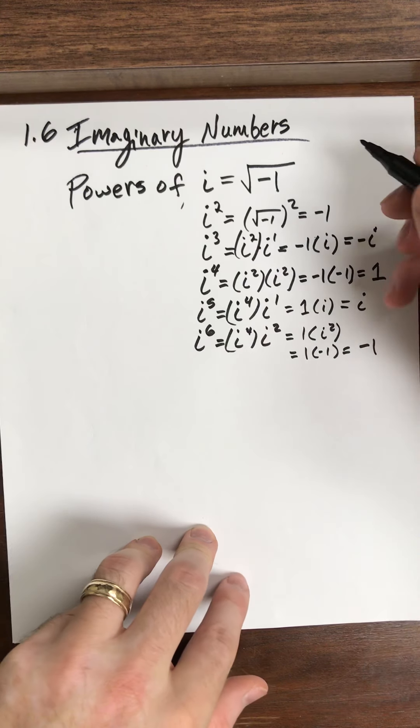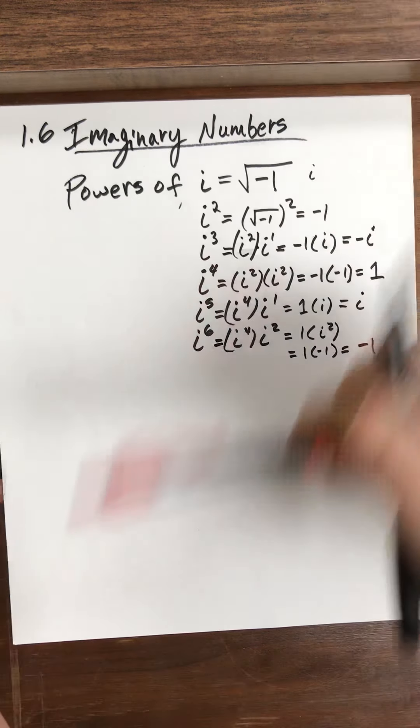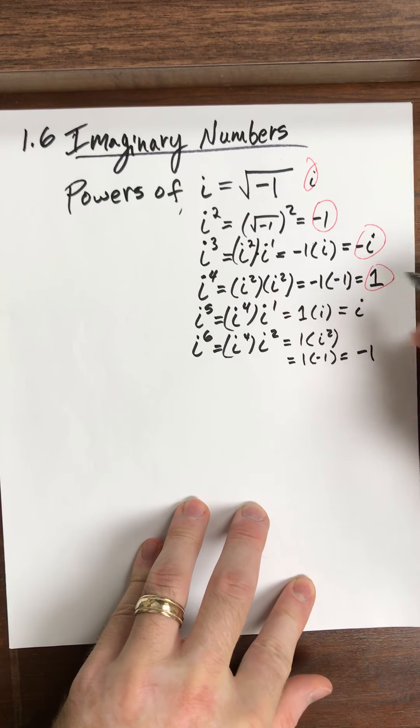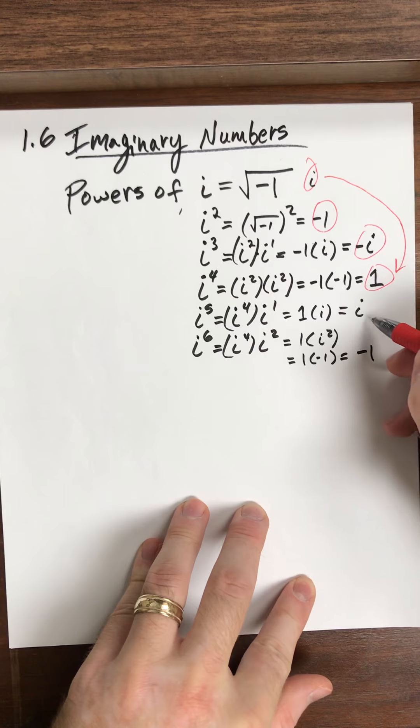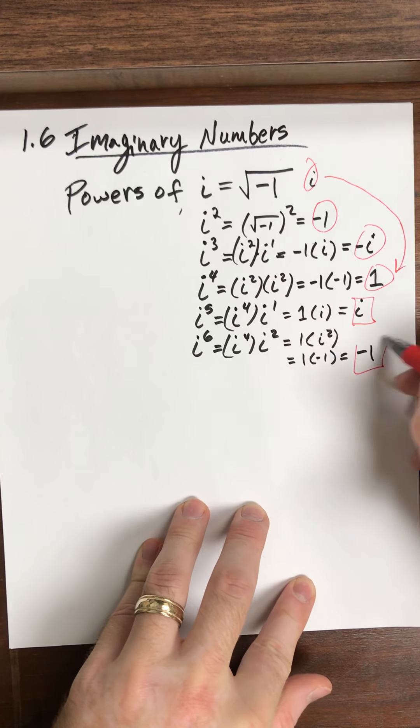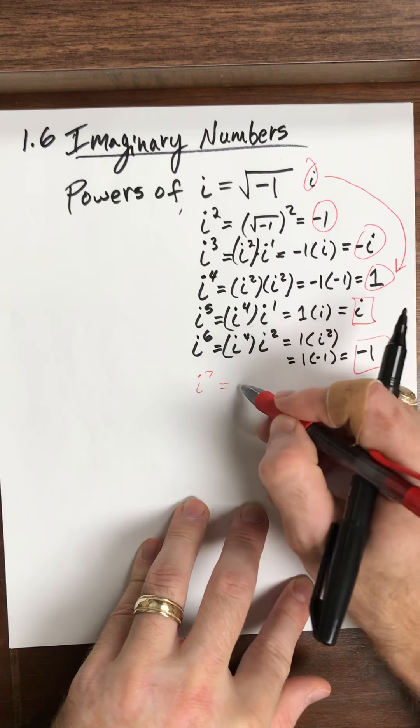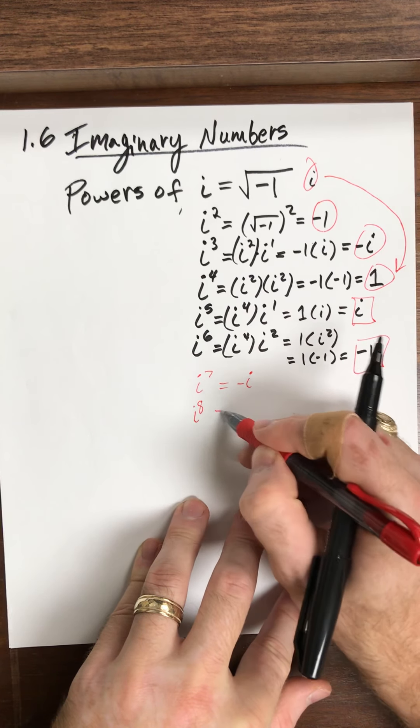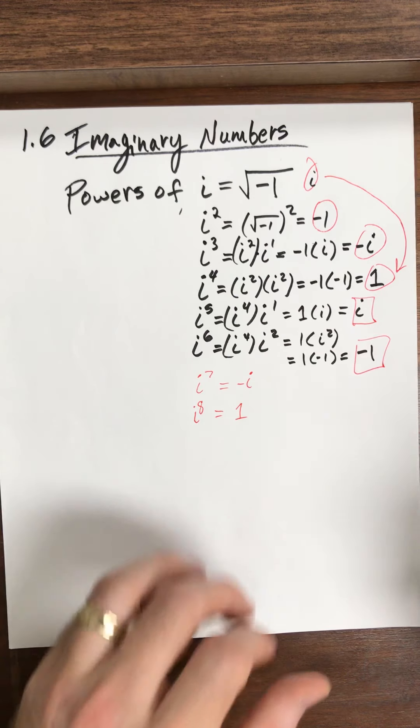Ooh, interesting. So I have i, negative 1, I have negative i, and 1. And it looks like once I get down to here, it cycles back again. I get i, negative 1. What do you think is going to happen here? i to the 7 is what? Negative i. i to the 8 is what? That's 1 again. So it's cycling through.